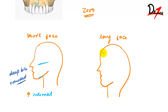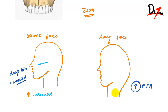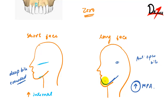Long face individuals have excessive lower anterior facial height. The palatal plane rotates down posteriorly, the mandible shows backward rotation, and there is an increase in the mandibular plane angle. This occurs because of lack of normal forward internal rotation or even backward internal rotation centered in the condyle. Such patients have anterior open bite and mandibular deficiency, because the chin rotates back as well as down.